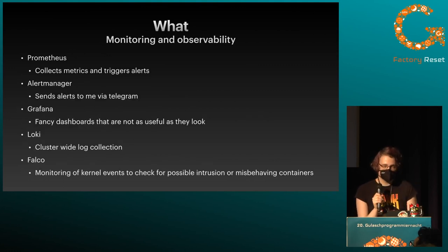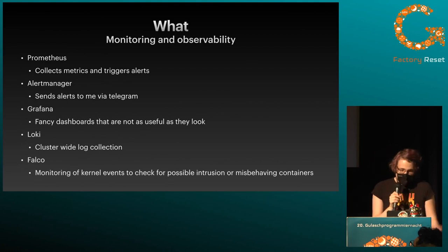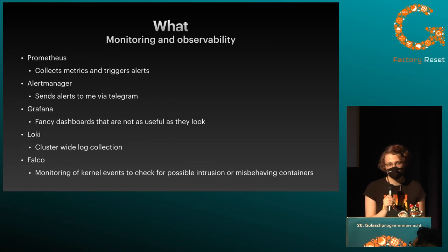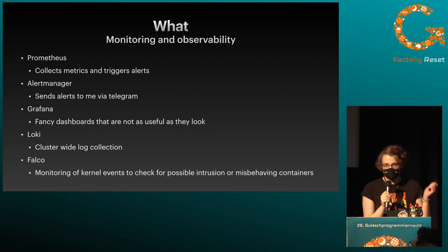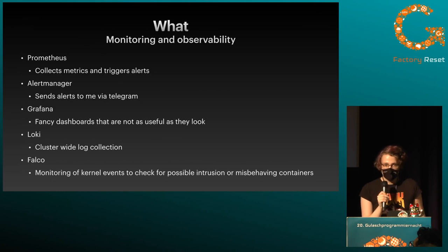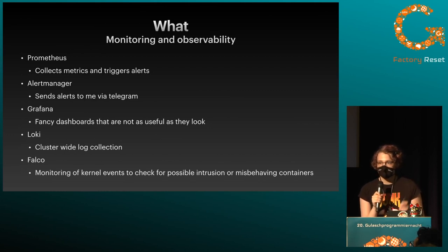For monitoring and observability: Prometheus collects metrics and triggers alerts. I've got Alertmanager, which messages me via Telegram, usually in the middle of the night when something breaks. I've also got Grafana with super fancy dashboards that I barely ever use, but they look nice. Then I've got Loki, which collects all my logs and puts them in one place. And I've also got Falco, which monitors my kernel for potential security issues — so when someone hacks me, I hopefully find out pretty quickly.